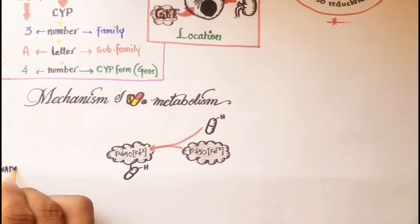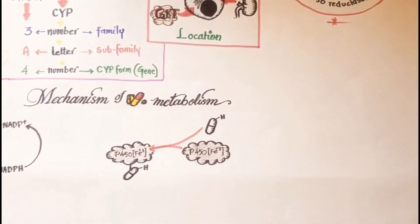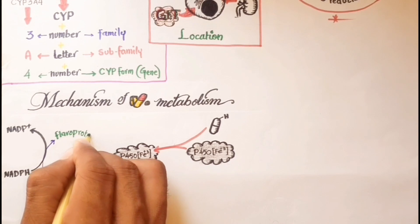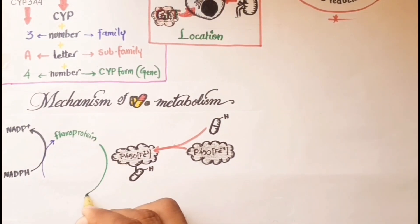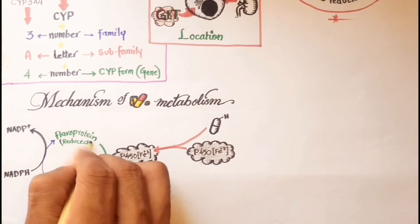Subsequently, in the second step, NADPH donates an electron to the flavoprotein P450 reductase, and the flavoprotein is reduced from oxidized form, which in turn reduces the iron to ferrous form.